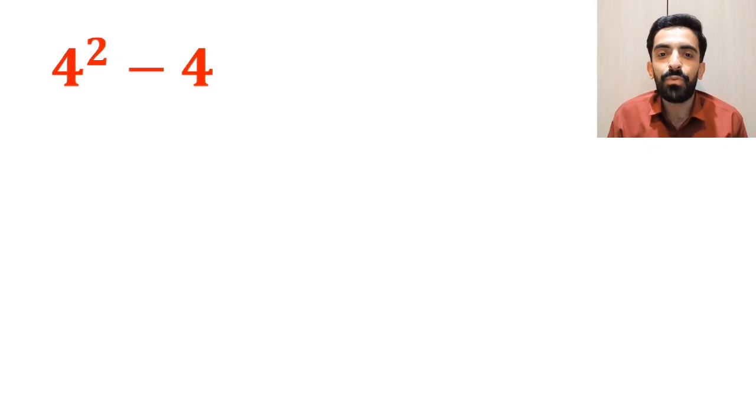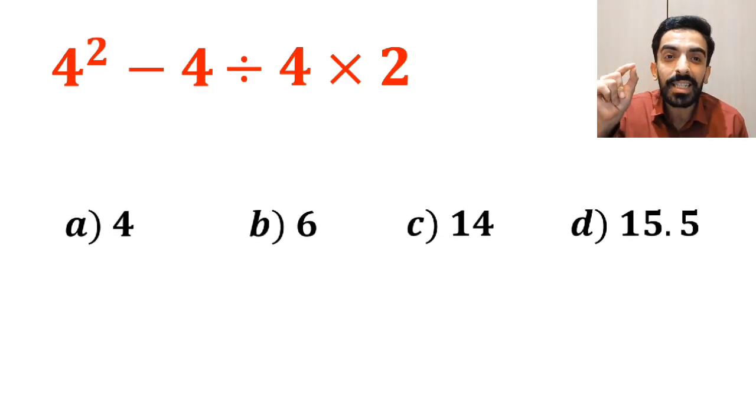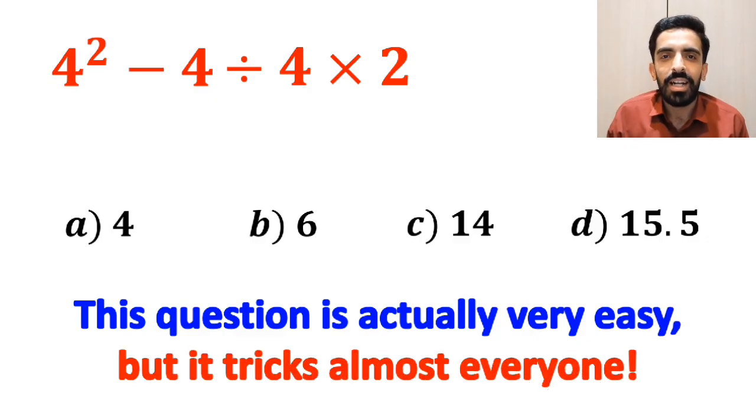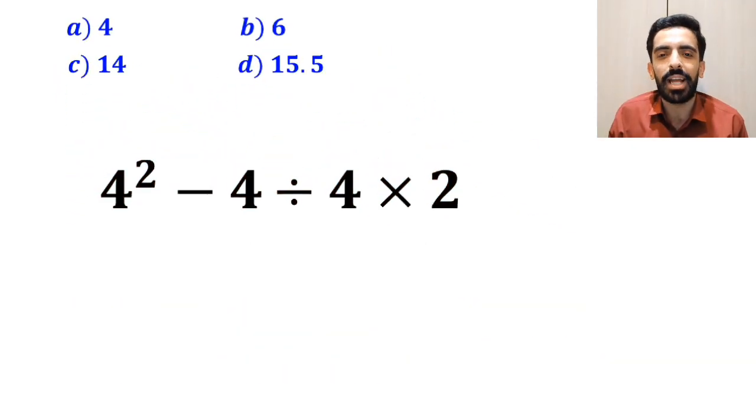What is the value of the expression 4 squared minus 4 divided by 4 times 2? Which option do you think is the correct answer to this question? This question is actually very easy, but it tricks almost everyone. Let's break it down step by step together.